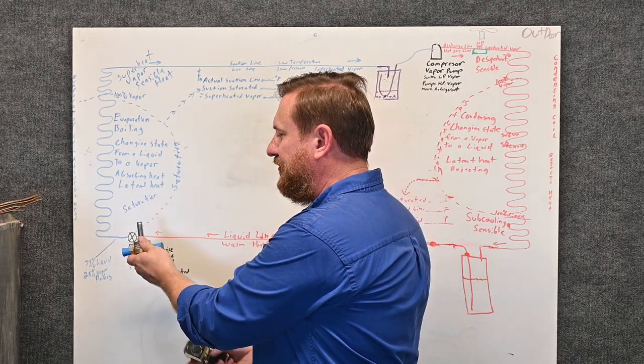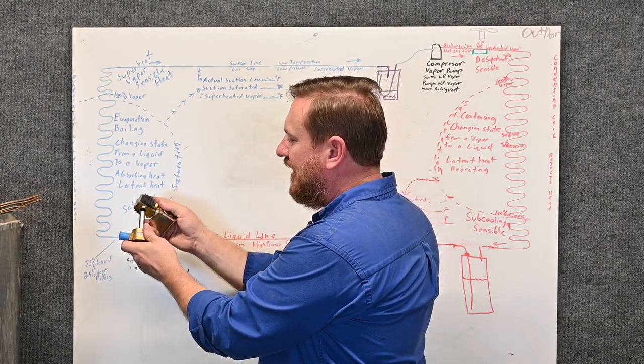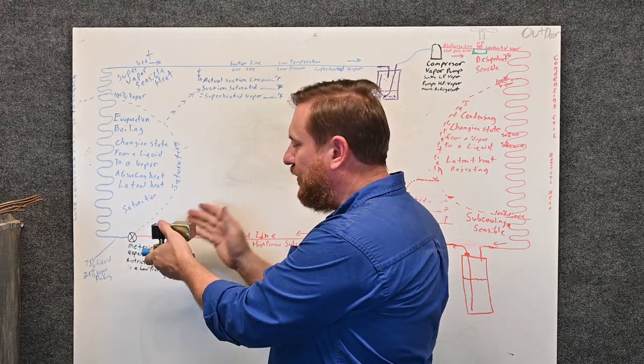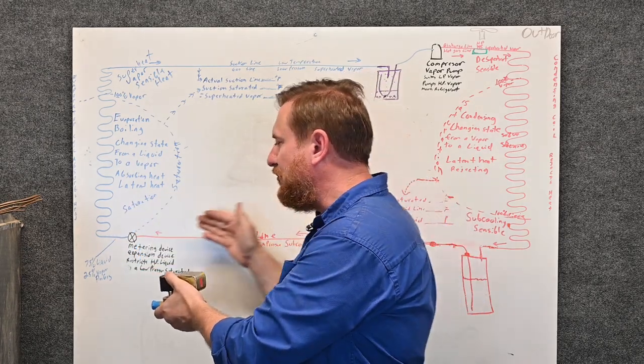The thermostat will say, we need more cooling. The thermostat will energize our electromagnet or solenoid, open the valve. Now refrigerant's going through a metering device, boiling from a liquid to vapor, superheating.